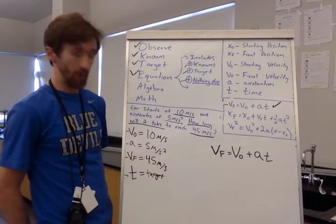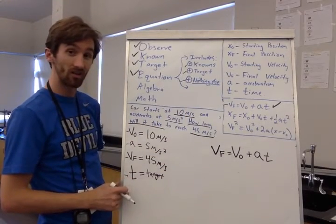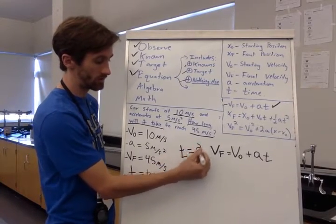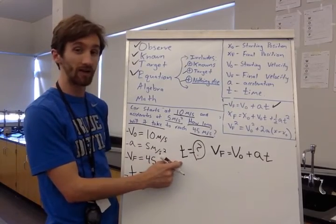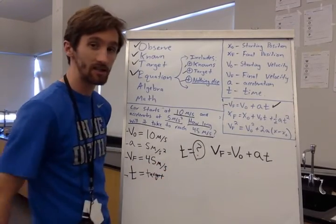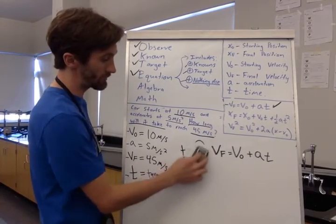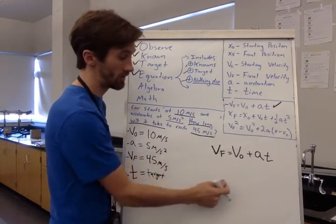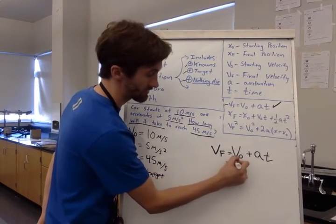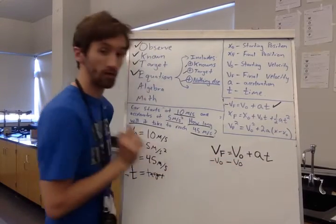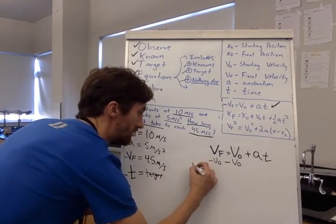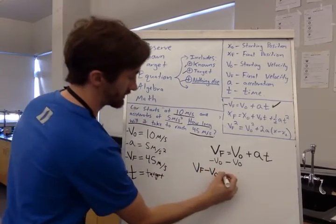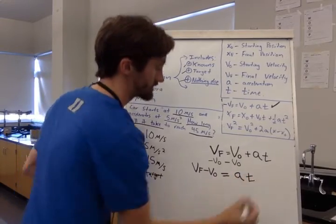Now I have to do some algebra. So I've got to rearrange this equation because I want my target of time. So I need T equal to something because that's my target. I've got to have my target equal. So I've got to get T all by itself over here. So the way I'm going to do that is the first thing I've got to do is I've got to take my initial velocity over to the other side. So I'm going to subtract initial velocity and subtract initial velocity. And that's going to give me